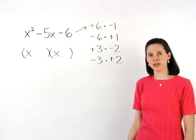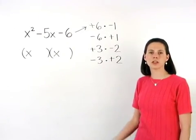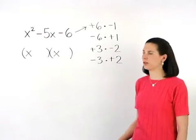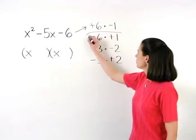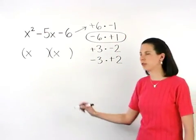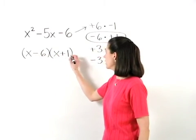This is a tricky problem because many of these pairs of factors look like they could add to negative 5. But the only one that does is negative 6 times positive 1. So our answer is x minus 6 times x plus 1.